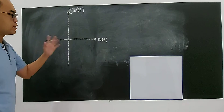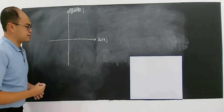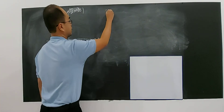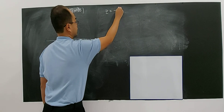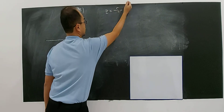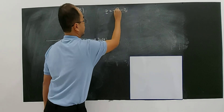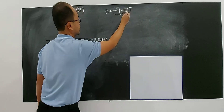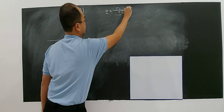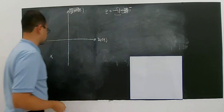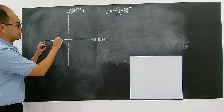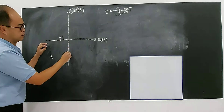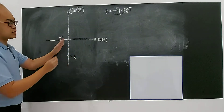So, what happens if your complex number, for example, Z equals to negative 1 minus 3i? You can see that both are negative. Negative 1 minus 3i — this will be in this quadrant.